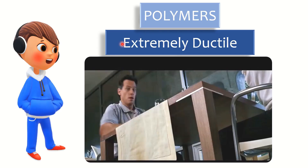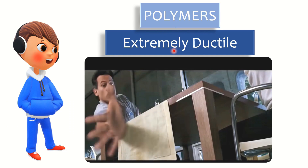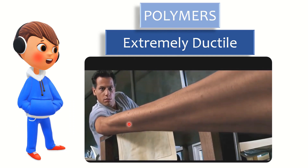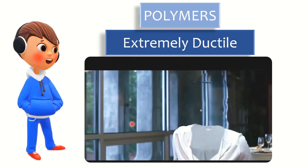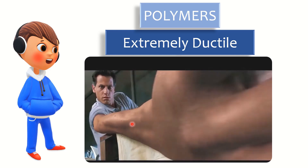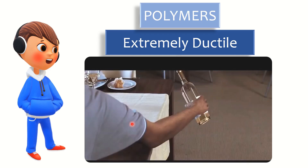Coming to polymers — they are extremely ductile. That means they are more ductile than metals. When we apply some force, they can elongate more than metals without any fracture.